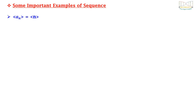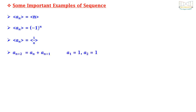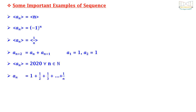Some important examples of sequences are: a_n = n; a_n = (-1)^n; a_n = 1/n; the Fibonacci-type recurrence a_{n+2} = a_n + a_{n+1}; and a_n = 2020 for all n belonging to N, which is a constant sequence.